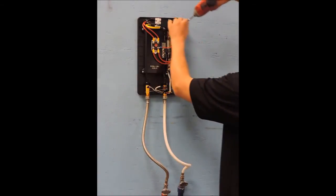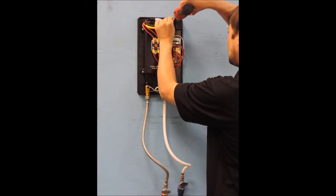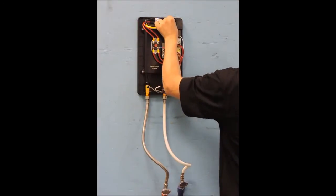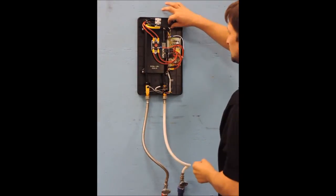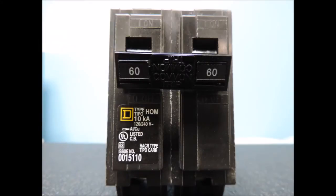Before moving on to the wiring, be sure to free the wire retainer to ease the installation. The power for this unit needs to be supplied by a 60 amp double pole breaker.